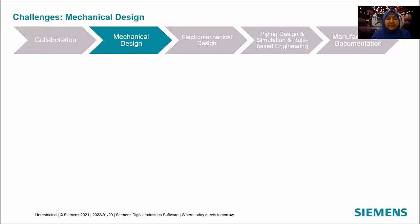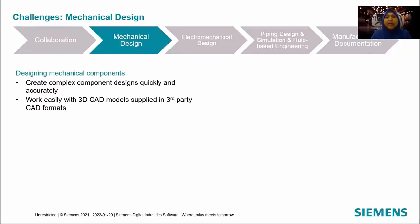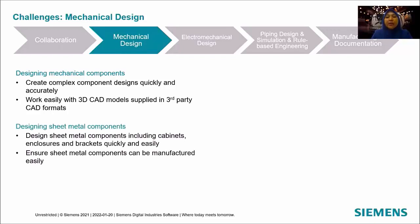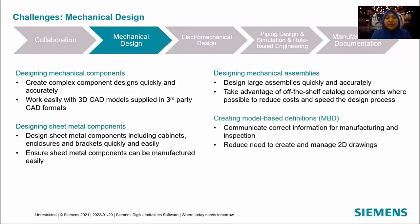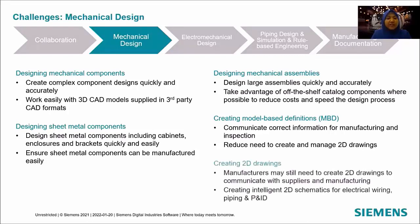The second challenge is mechanical design, where they are required to create complex component designs quickly and accurately, and be able to work with third-party CAD formats. In sheet metal, they require to create parts such as cabinets, enclosures, and brackets. In mechanical assembly design, they deal with large assemblies and need catalogue components to speed up the process. They also require model-based definition, intelligent 2D schematics for electrical wiring, piping, and P&ID.